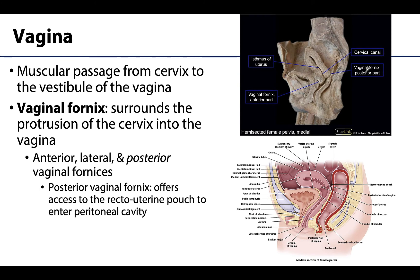The vagina is a fibromuscular tube that extends from the cervix to the vestibule of the vagina at the vaginal orifice, sometimes called the ostium of the vagina. The superior portion of the vagina surrounds the protrusion of the cervix into the vagina, creating a recess between the cervix and the vagina referred to as the fornix. The different parts of the fornix are given separate names: anterior, right and left lateral, and posterior vaginal fornices.